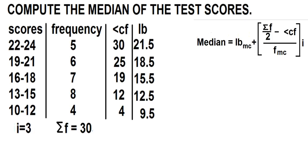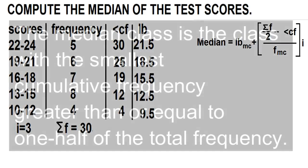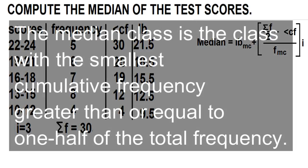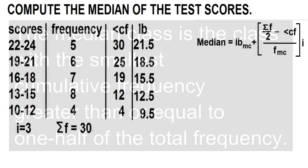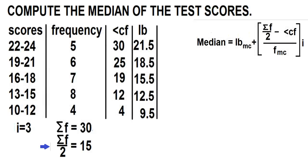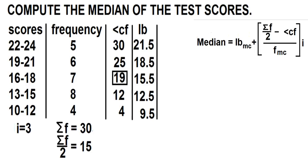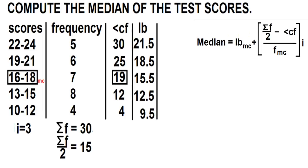Now let's identify the median class. The median class is the class with the smallest cumulative frequency greater than or equal to one-half of the total frequency. What's one-half of 30? 30 divided by 2 is 15. In the cumulative frequency column, what is greater than or equal to 15? It's 19. So the median class is 16 to 18.